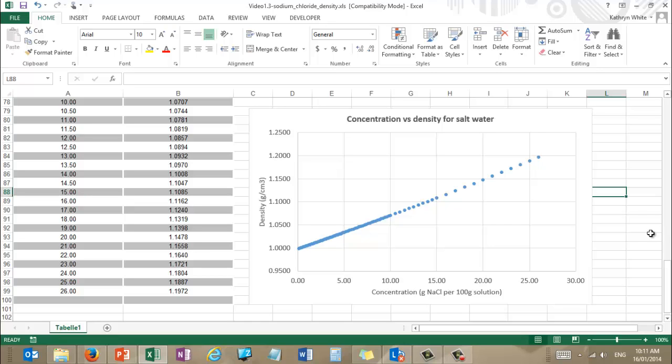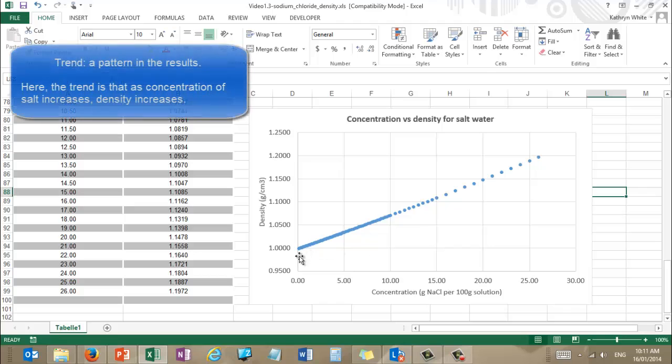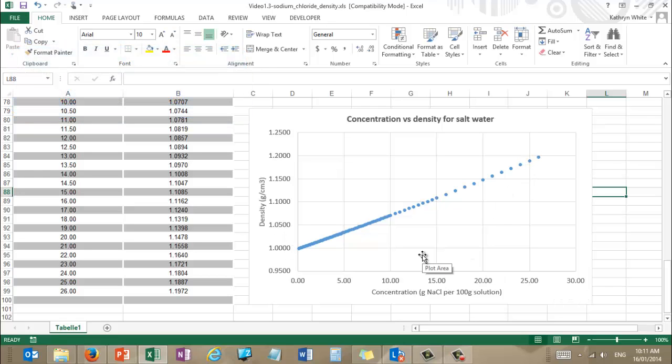All right. So we've got our graph and you can see that there's an obvious trend that as the concentration of salt in the salt solution increases, so does the density. This illustrates our point that the intensive property of density is not a fixed value for a mixture. It really depends on the proportions of the ingredients in the mixture. So here we've got as you increase the proportion of salt, the density also increases.